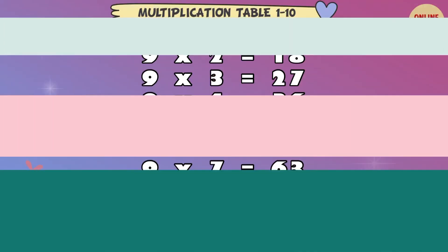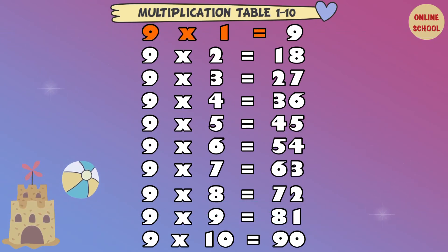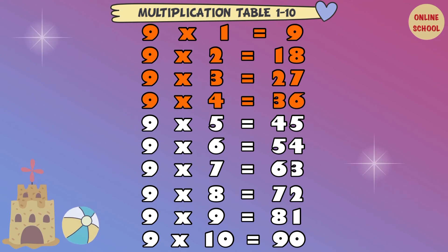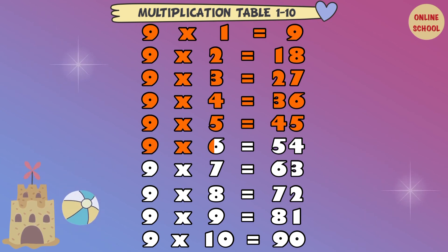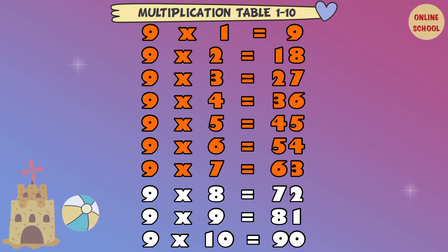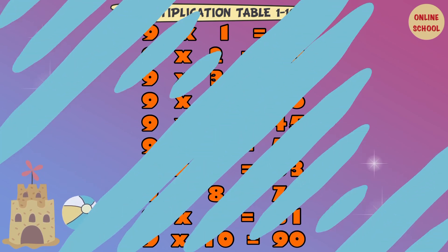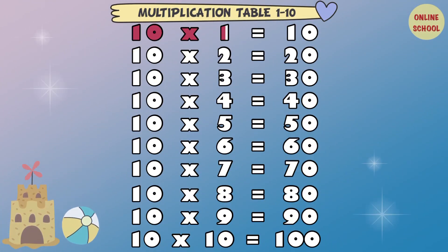9 x 1 equal 9. 9 x 2 equal 18. 9 x 3 equal 27. 9 x 4 equal 36. 9 x 5 equal 45. 9 x 6 equal 54. 9 x 7 equal 63. 9 x 8 equal 72. 9 x 9 equal 81. 9 x 10 equal 90.